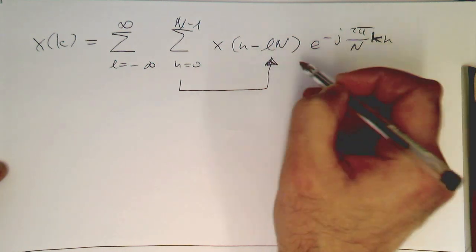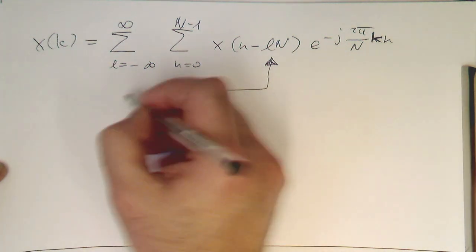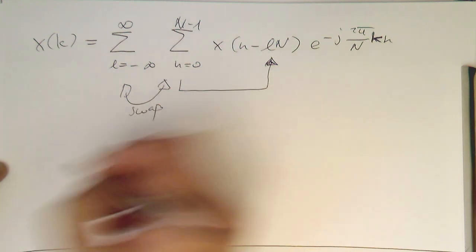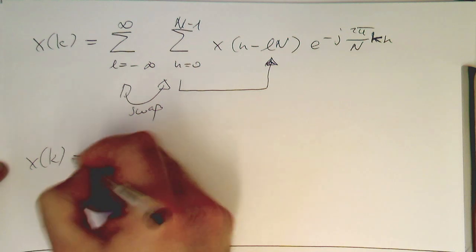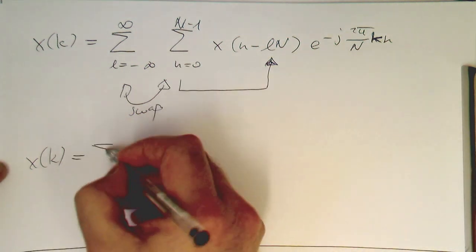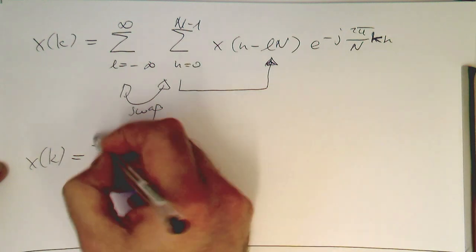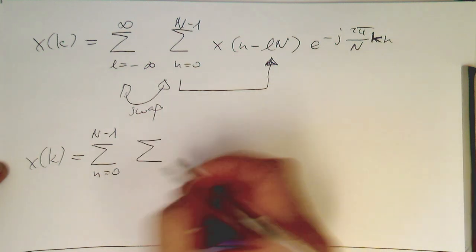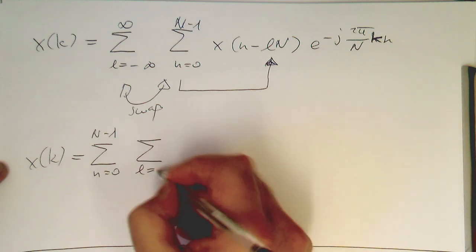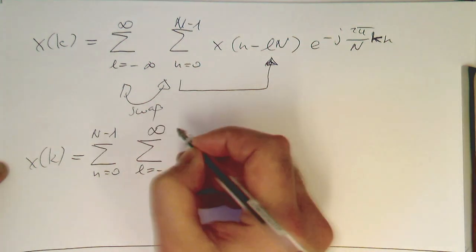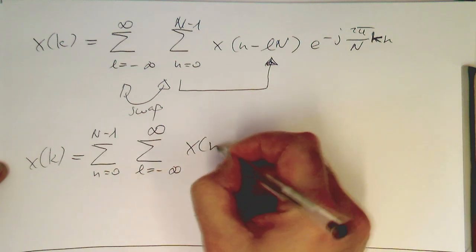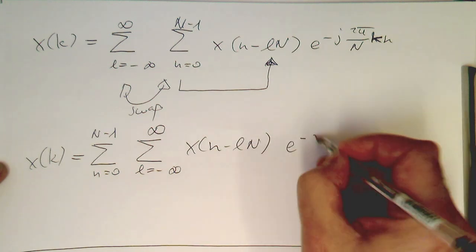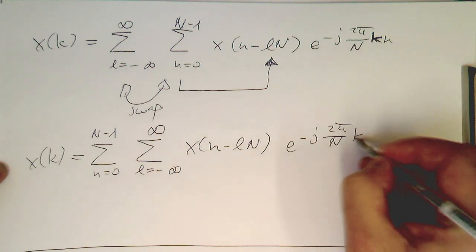So now the next step is just swap these two summation signs here. Swap them. So let's say this is now x of k, and so now our n-index is running now here, and then we have our l-index inside, and this is running from minus infinity to plus infinity. And now we have x of n minus ln, and then e to the minus j 2 pi divided by n k n.